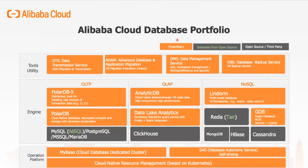This is a high-level blueprint of all the different services that we have today in Alibaba Cloud. Under the OLTP engine, we have PolarDBX, PolarDB, and RDS. Under the OLAP vertical, we have ADB, AnalyticDB. If you'd like to build a data lake in Alibaba Cloud, we have DLA, Data Lake Analytics. ClickHouse is a growing popular NoSQL columnar database. Under the NoSQL vertical, we have Lyndon.